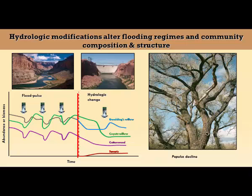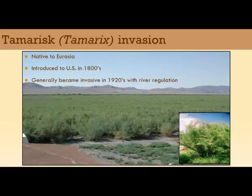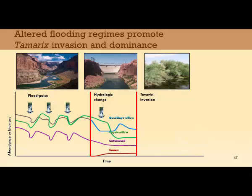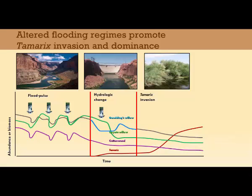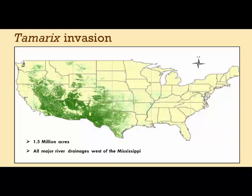We also saw during the same time period a coincident introduction, naturalization, and expansion of tamarisk — Tamarix. It's a native Eurasian plant introduced to the U.S. in the 1800s and it generally became invasive from the 1920s onward, coinciding with this period of dam development and river regulation in the western U.S. Now in many of our river systems we see tamarisk and a greatly reduced abundance and distribution of native cottonwoods and willows — over a million and a half acres in the western U.S. are now affected by tamarisk.